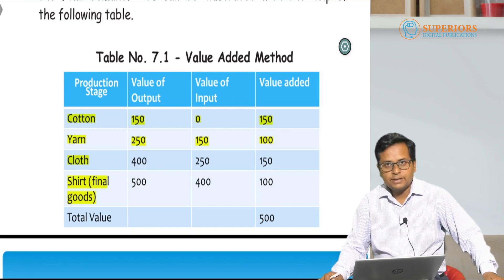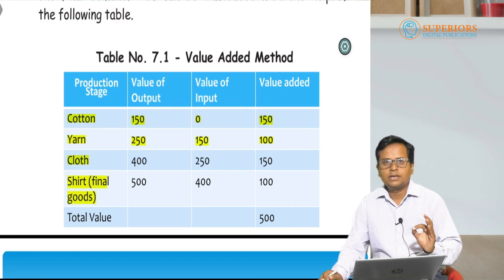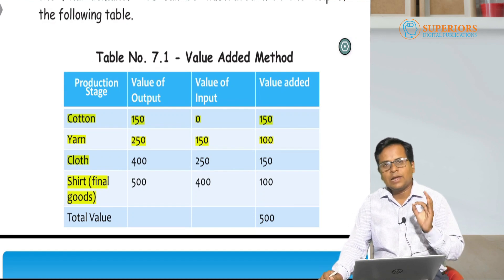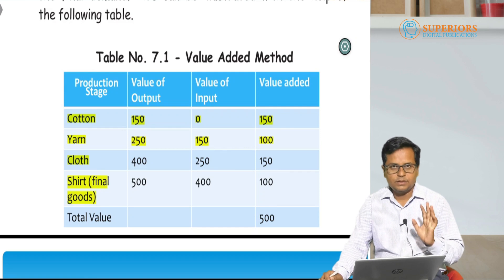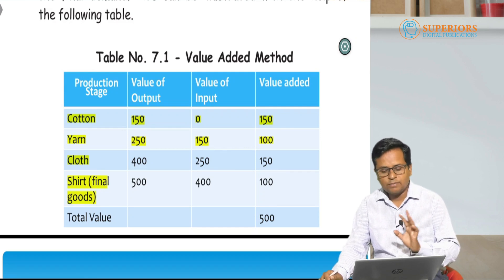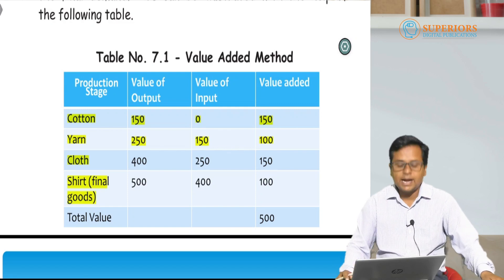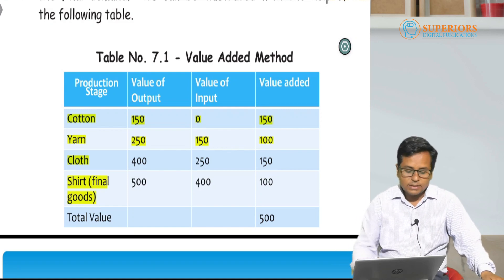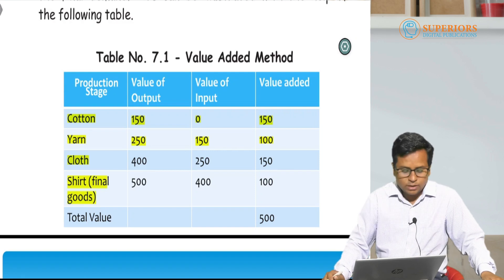The value added means the difference between the value of output and the value of input. The value of input is rupees 150 and the value of output is rupees 250, so 250 minus 150 equals 100. This is the value added at the second stage of production.